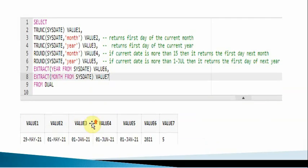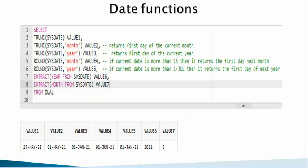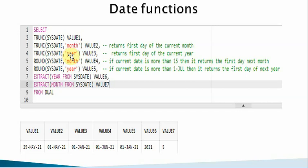Now let's discuss date functions. The first is TRUNC with a date: TRUNC(SYSDATE) removes the timestamp and returns only the date part. If I add the 'MONTH' parameter, TRUNC(SYSDATE, 'MONTH') returns the first day of the current month — for example, if today is May 29th, it returns May 1st. Using TRUNC(SYSDATE, 'YEAR') returns the first day of the current year, which is January 1st, 2021.